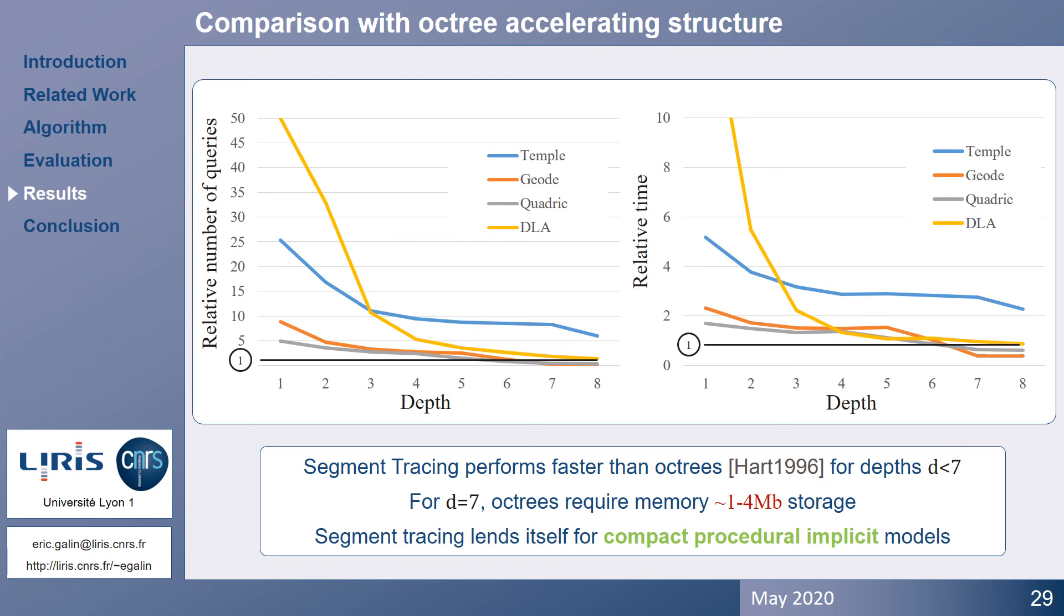Finally, here is a comparison of our method with an octree accelerating data structure storing local Lipschitz bounds. This is a typical storage computation trade-off. Results show that for a depth below 7, segment tracing performs faster than octrees. Finally, remember that segment tracing performs all computations on the fly and thus preserves the compact aspect of procedural implicit models.